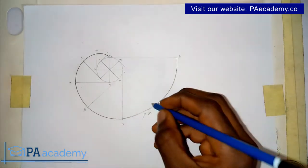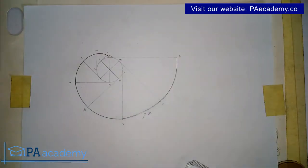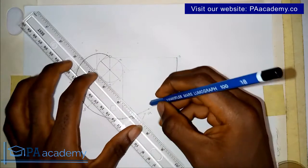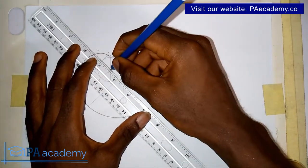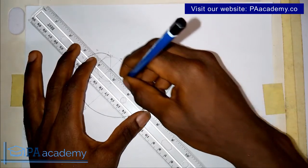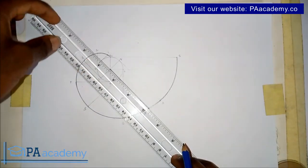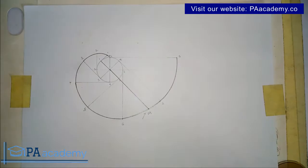Now we've picked our point. The next thing we are going to do is draw a line from point M to the center of the circle. Let's call the center point O.